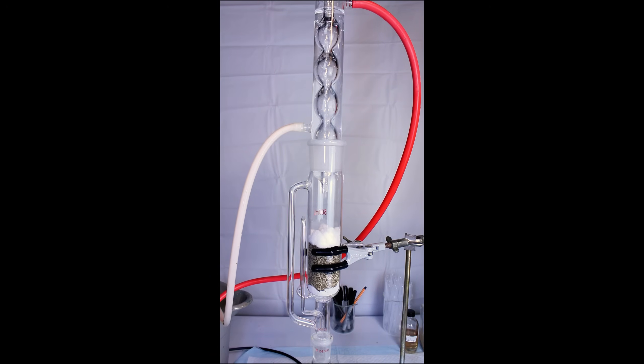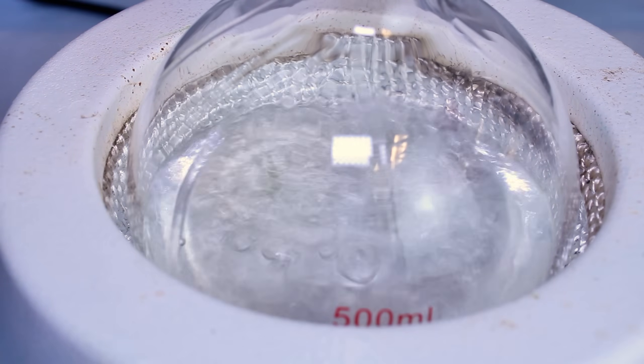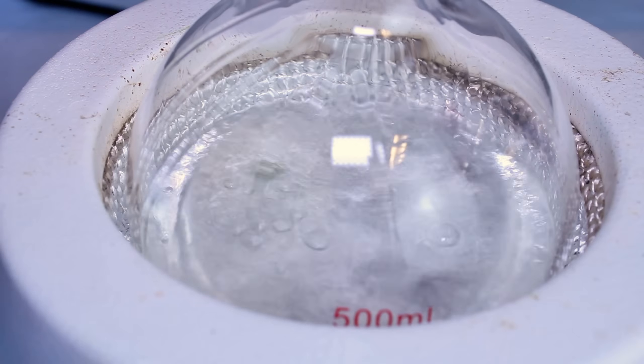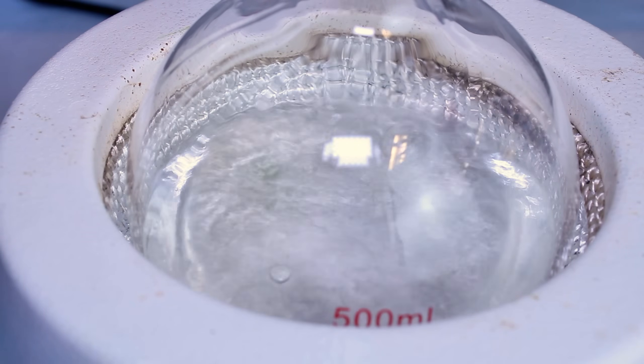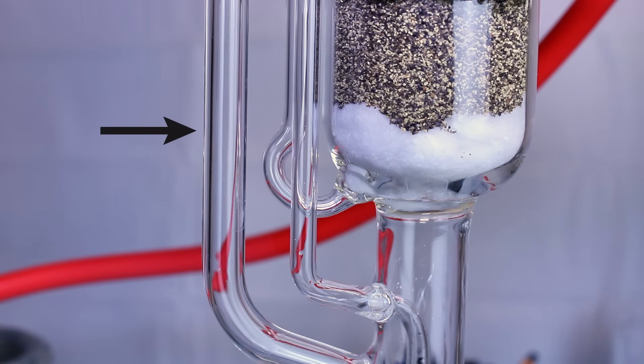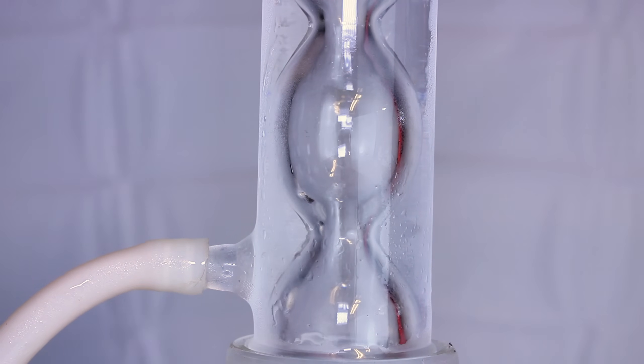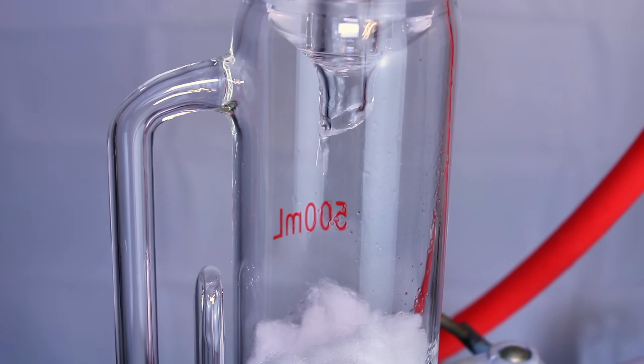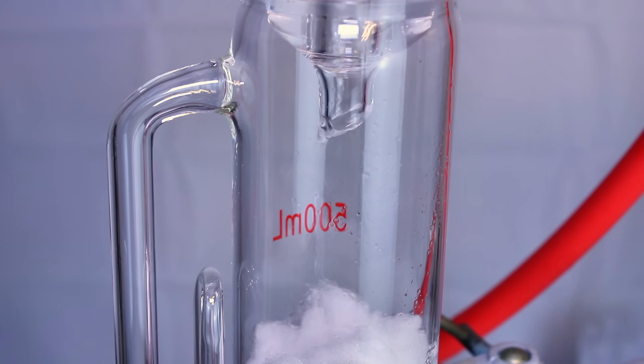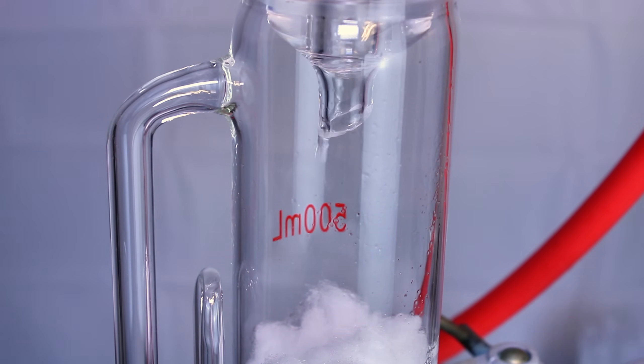Cold water is circulated through the Allihn condenser, and I crank my heating mantle to 100 degrees Celsius. As the isopropyl evaporates, it travels up the leftmost arm of the Soxhlet Extractor and back up into the condenser, where it's immediately condensed back into a liquid and drips onto the black pepper. Over time, the solvent soaks through the pepper and pulls out the piperine along with several other secondary chemicals.